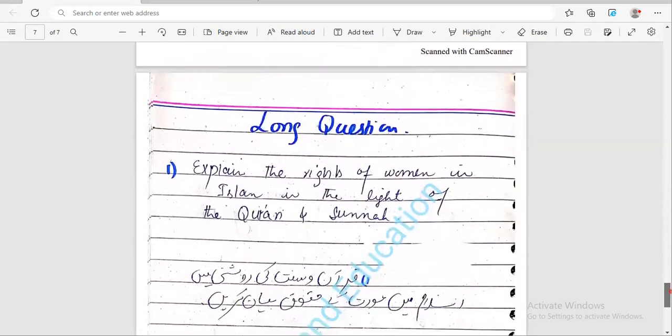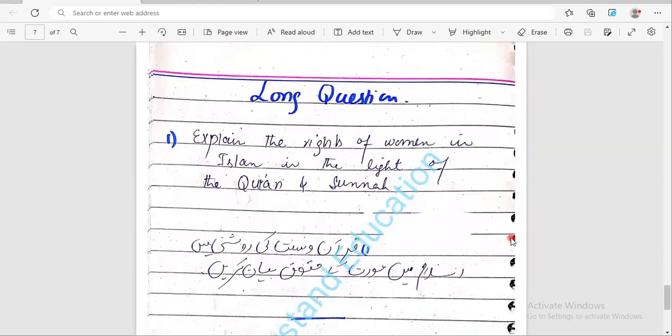These were the short questions. Now only one long question is important from chapter number four: explain the rights of women in Islam in the light of the Quran and Sunnah. These were the very important short and long questions. You can write them or mark it out because it's very important and 99 percent chances are that these can come in the paper. Like, share, subscribe, and I will upload the paper planning scheme so that you can benefit. Allah Hafiz.